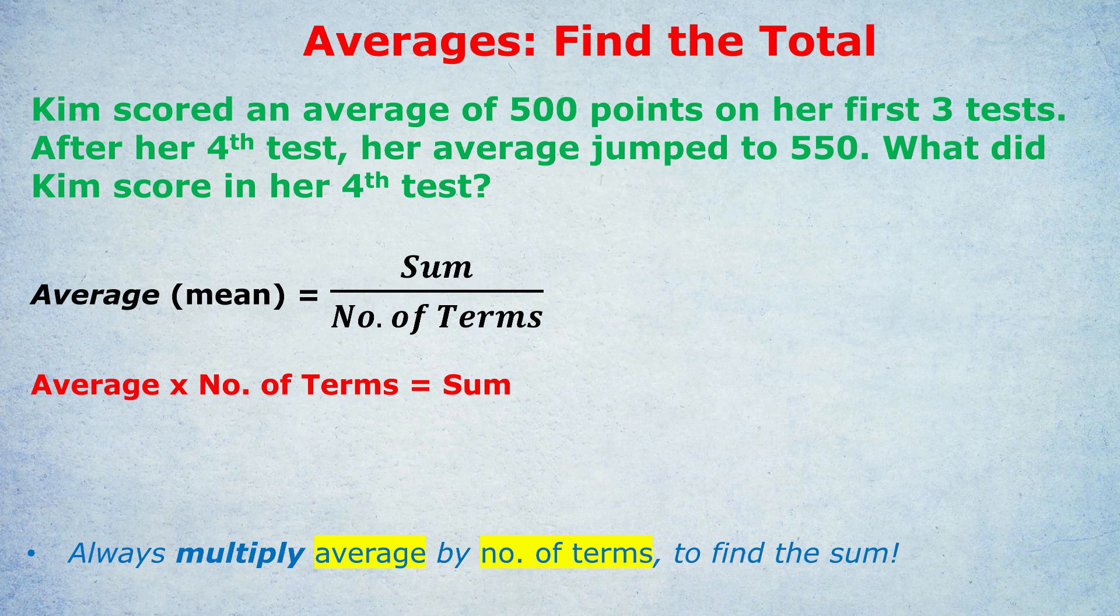It might seem fairly obvious but I can count by the hundred the number of students I've worked with who didn't quite get an average question right because they didn't follow the following steps. Let's test this tip out on the question above. Kim scored an average of 500 points on her first three tests. After her fourth test her average jumped to 550. What did Kim score in her fourth test?